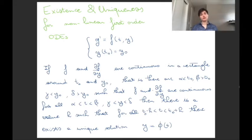What do we need for non-linear first order ODEs? Non-linear first order ODEs means that we have an ODE y' equals a function that we don't specify the form of, and this function is a function of time and of y. We add an initial condition that is y(t0) equals y0.